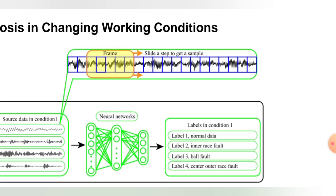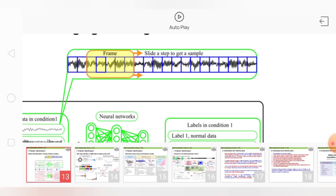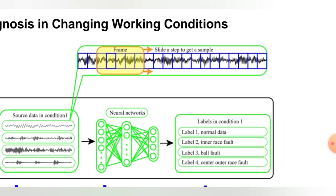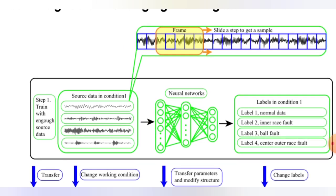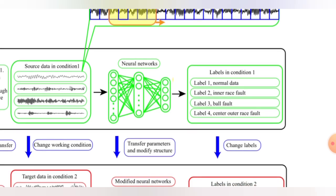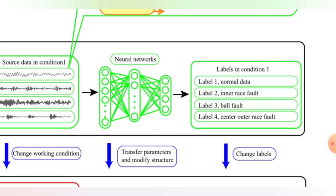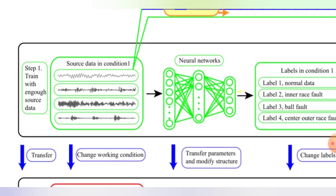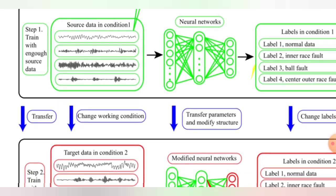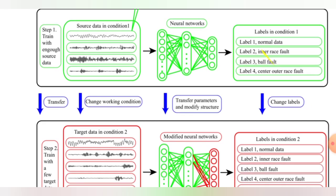The source data in condition one is shown in graphical fashion. The graphical representation of this source data is given here with respect to the bearing condition. The bearing conditions have neural networks. Level one is normal data, level two is inner race fault, level three is ball fault, level four is center outer race fault. So four types of faults we have measured here, and four types of wavelengths of the fault diagnosis are mentioned in this green line.